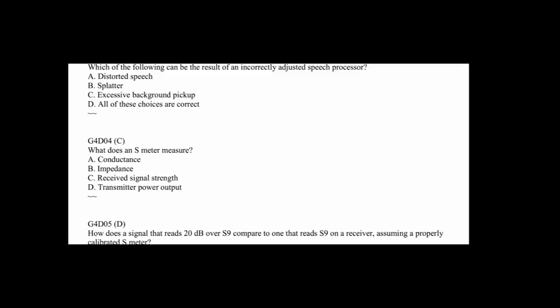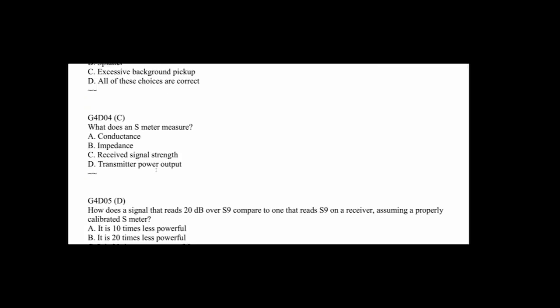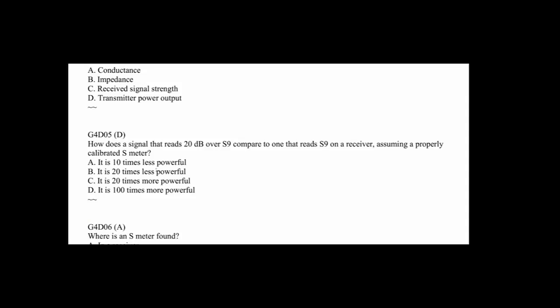G4D02: Which of the following describes how a speech processor affects a transmitted single sideband phone signal? Basically a speech processor brings up all the averages, so the answer is B. G4D03: Which of the following can be the result of an incorrectly adjusted speech processor? And the answer is going to be all: distorted speech, splatter, excessive background pickup, room echo, distortion. It's not a good thing, so the speech processor has to be properly adjusted, and that's by keeping the ALC at one-third to one-half scale. G4D04: What does an S meter measure? An S meter is a strength meter, so it's C, received signal strength. G4D05: What does a signal that reads 20 dB over S9 compared to one that reads S9 on a receiver, assuming a properly calibrated S meter? Well, this one's really easy, actually 20 dB, so the two is two zero, so it would be one followed by two zeros, or a hundred times.